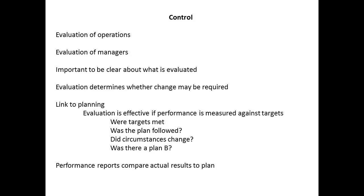For evaluation to be useful, it must be clear. Measuring the performance of a supervisor where the line production target has been missed due to lack of materials must take these unforeseen circumstances into account. However, persistent shortages of components for assembly would mean that changes are needed, and they could be determined to ensure that the assembly flowed more smoothly.